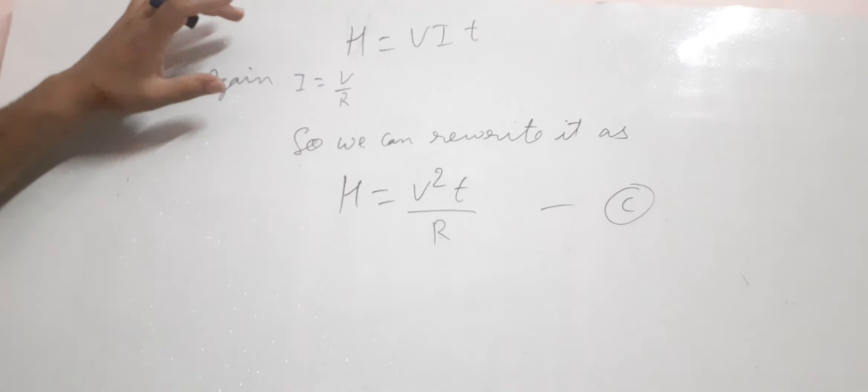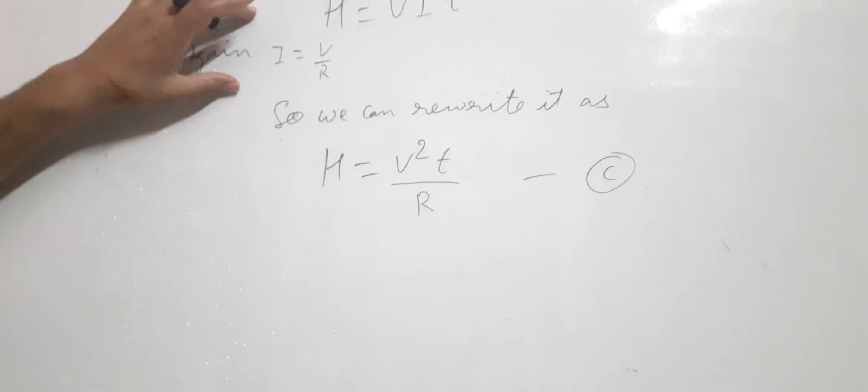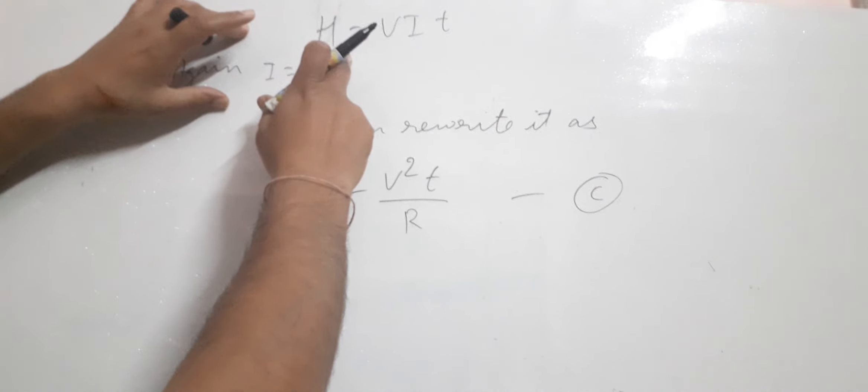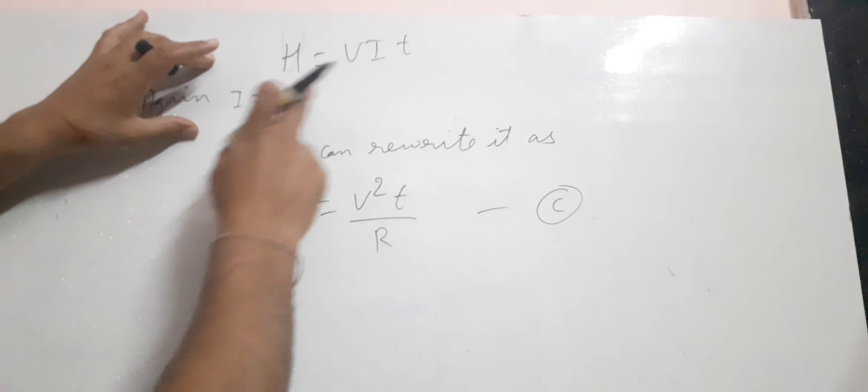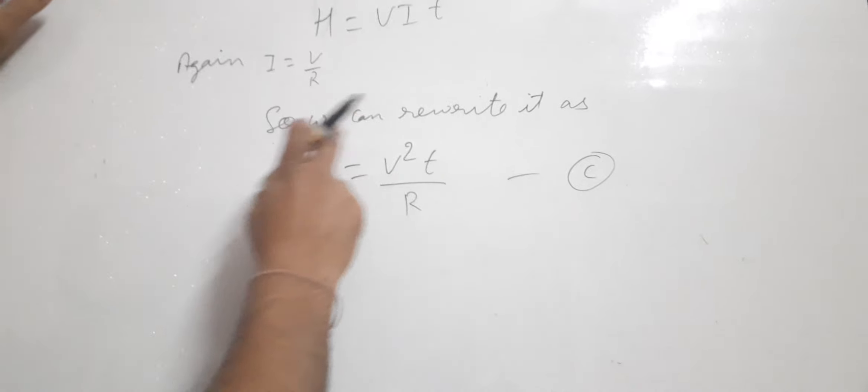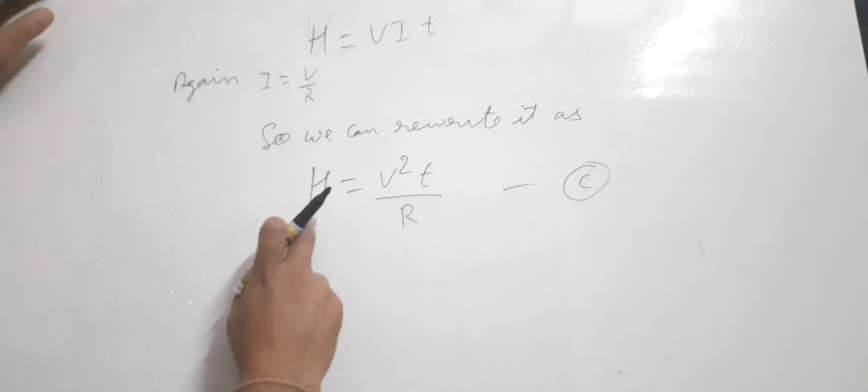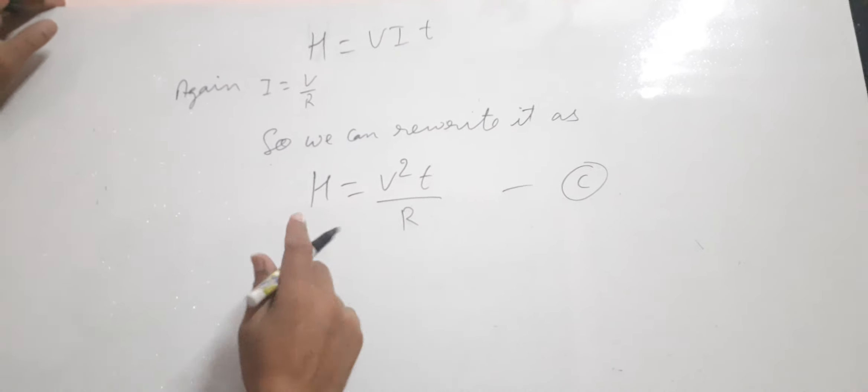Again using Ohm's law, you know that H = V × I × T, but I = V/R. So we can rewrite it as H = V²T/R.